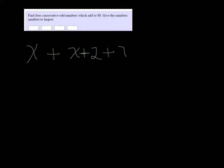And if I want the next odd number, it would be x plus 4. And the next one would be x plus 6. So you have to keep adding 2 to it, and then that's going to equal 88.